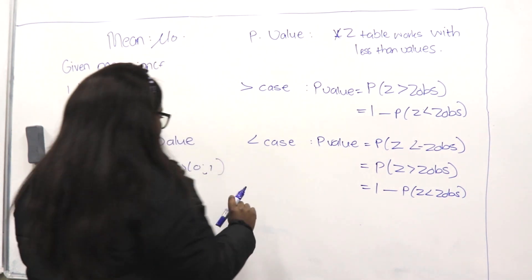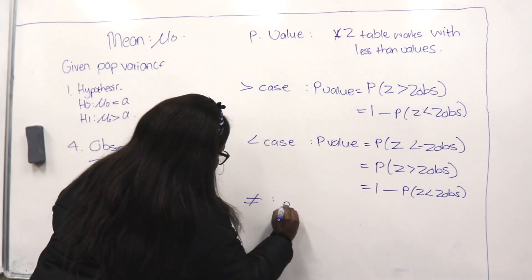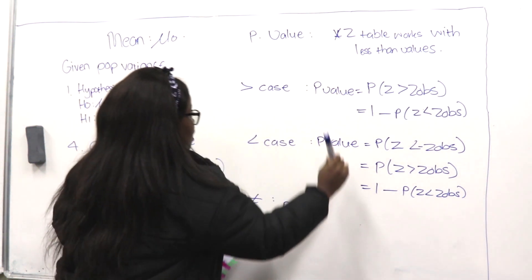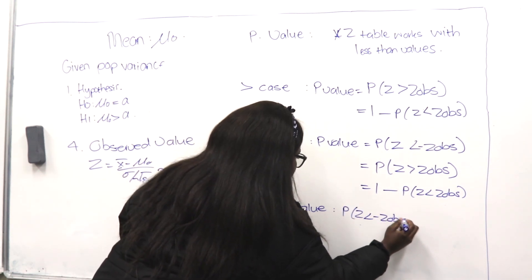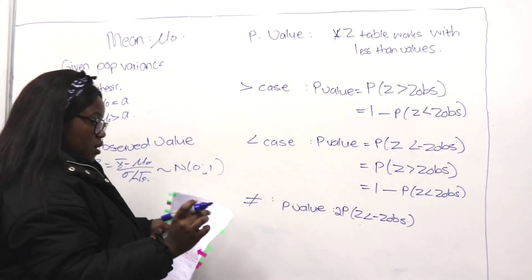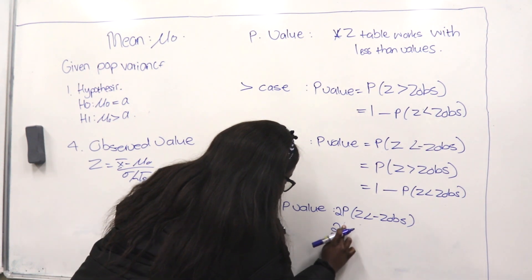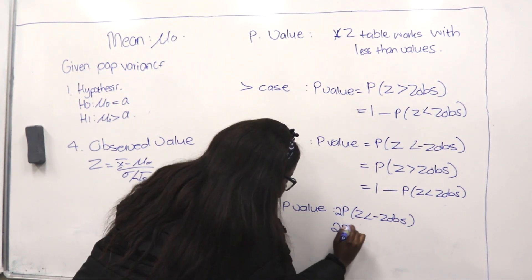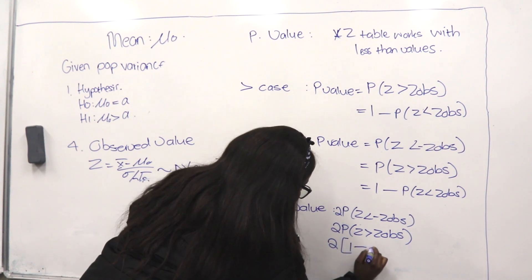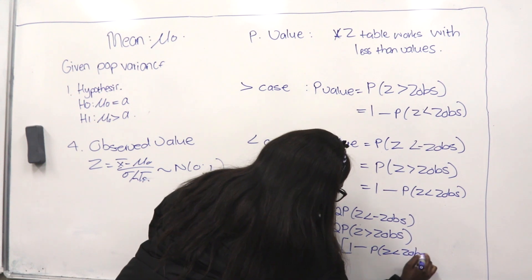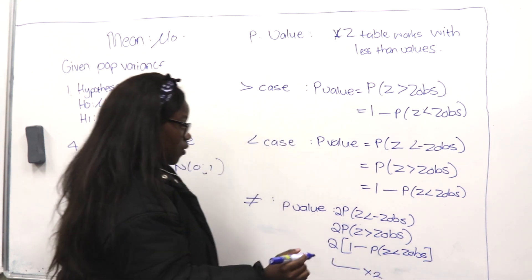For the two-tailed case, since we deal with less-than values, we write P(z less than z observed), then first change the sign, keeping the 2 outside the bracket: 2 times [1 minus P(z less than z observed)]. Keep the 2 outside so you don't forget to multiply by 2 at the end, then you get your p-value.